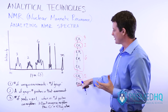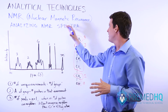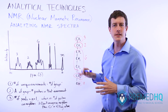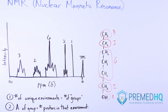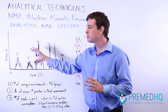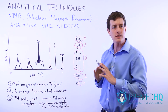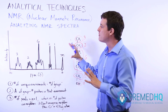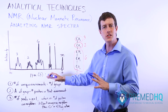We'll continue to use 1-hexanol as we discuss how to analyze NMR spectra, or a plot of the NMR data. This plot may not be entirely accurate — I didn't run my NMR for this — but I created one based on the general principles of NMR that I'll be teaching you. This will enable you to interpret any NMR spectrum data you're provided by using these simple steps.